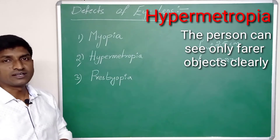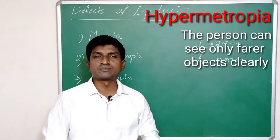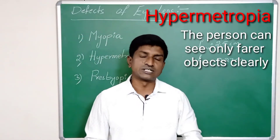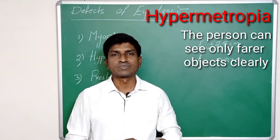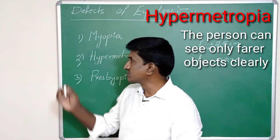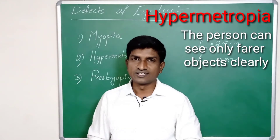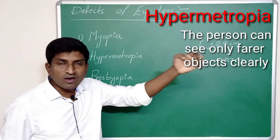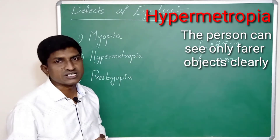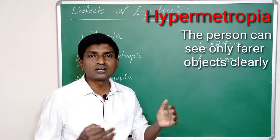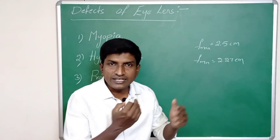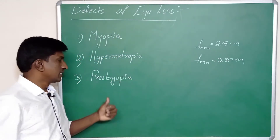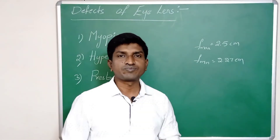Hypermetropia is the opposite of myopia. The person who has this problem can see distant objects clearly but not nearer objects. So in hypermetropia, far objects are seen clearly but near objects appear blurred.